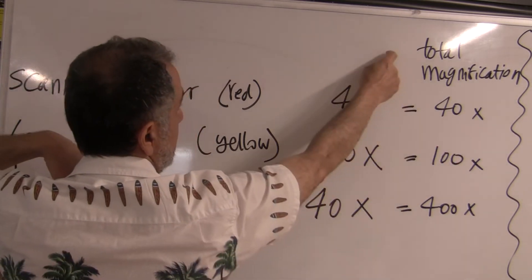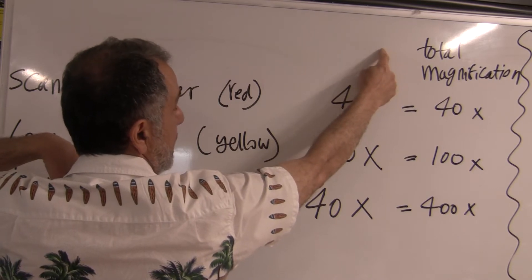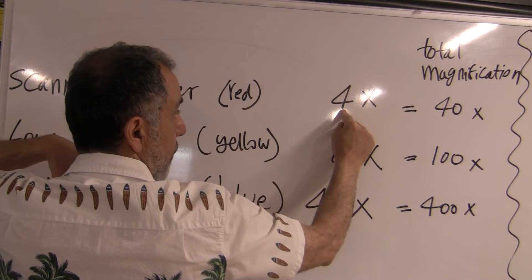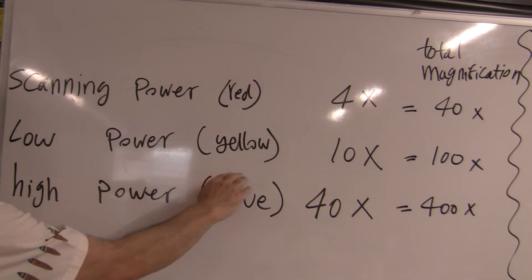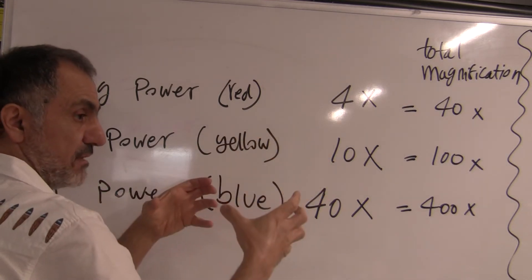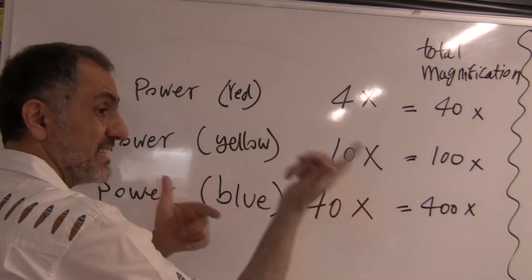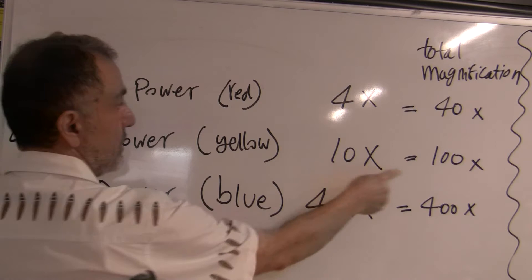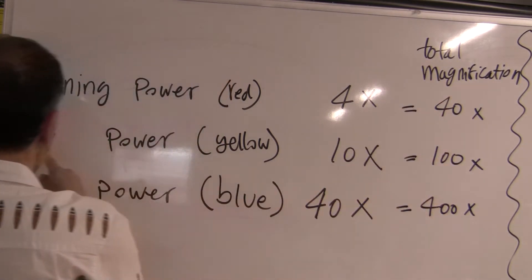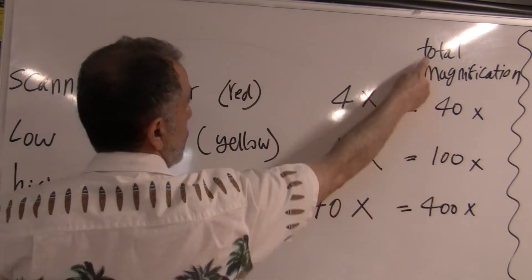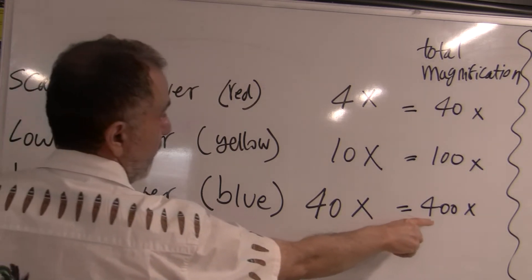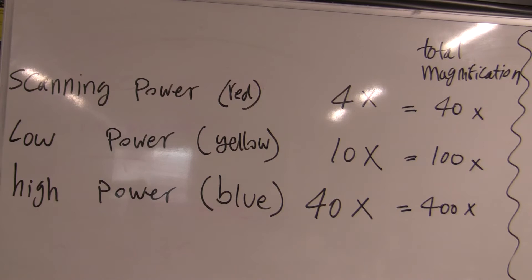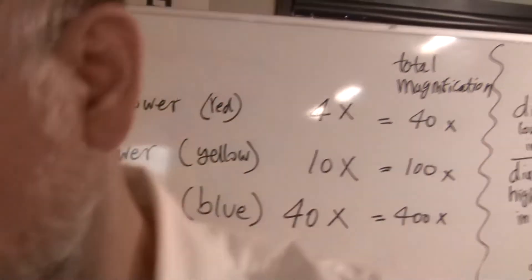Why 40 times bigger? Because the ocular lens is 10x, and 10 times 4 is 40. If you have physics, you know what I'm talking about. Then for low power, the yellow lens is 10x — it magnifies 10 times, times the 10x from the ocular lens eyepiece, so the total magnification for low power is 100. Total magnification for high power is 400.